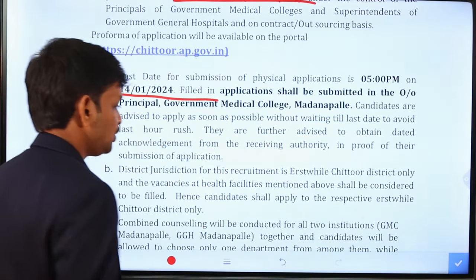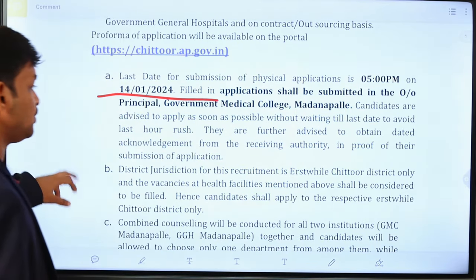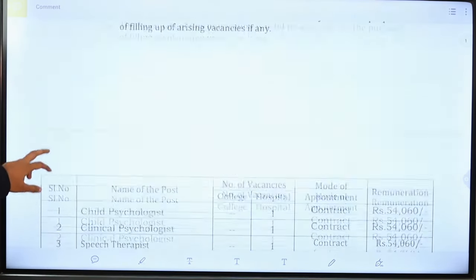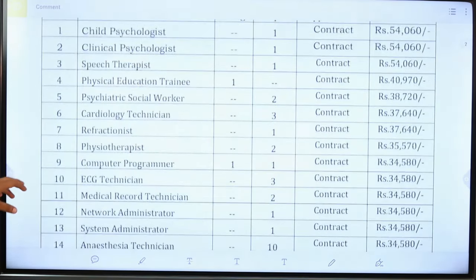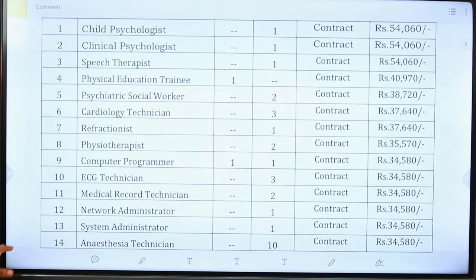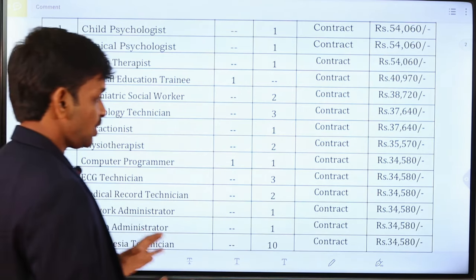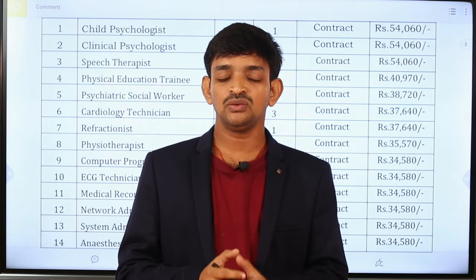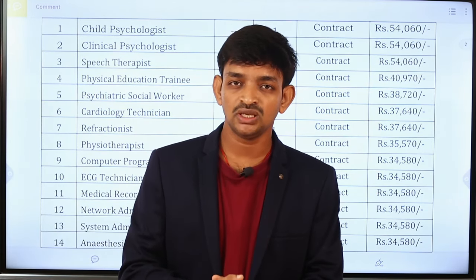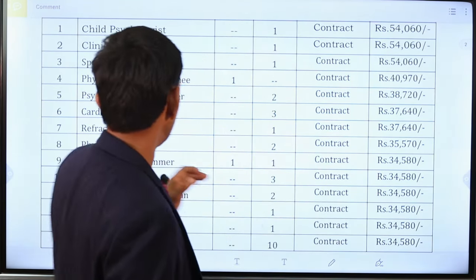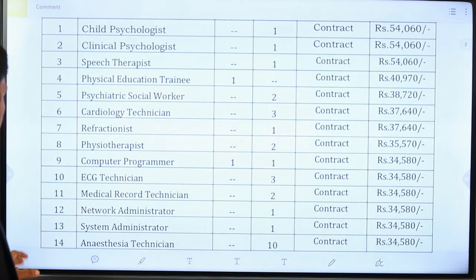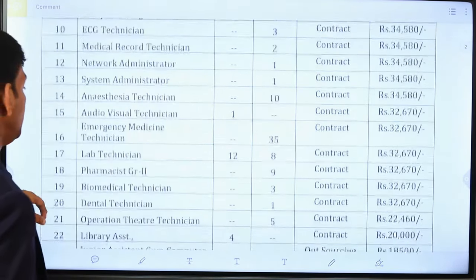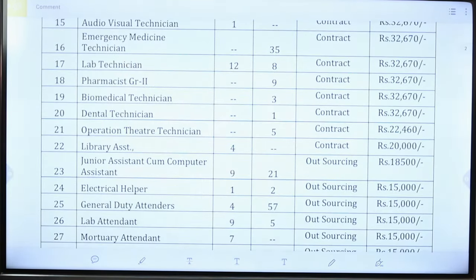If you have a few details about this notification, there are many of you in the notification. You have to be able to review the contract basic, outsourcing basic, and recruit. If you cover any details about this, you will not cover any details.